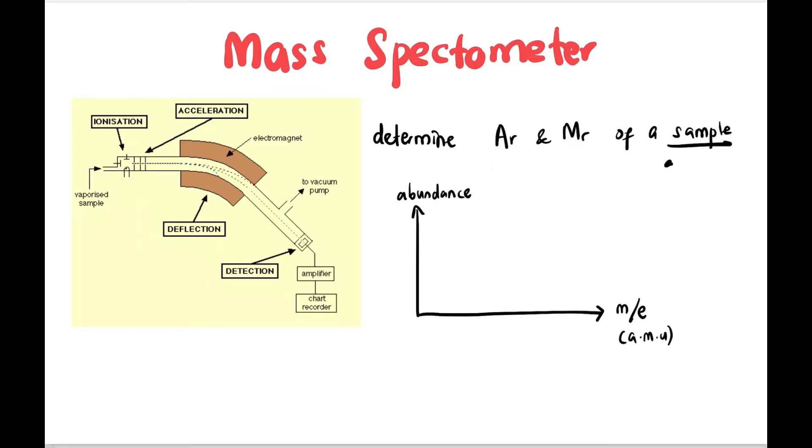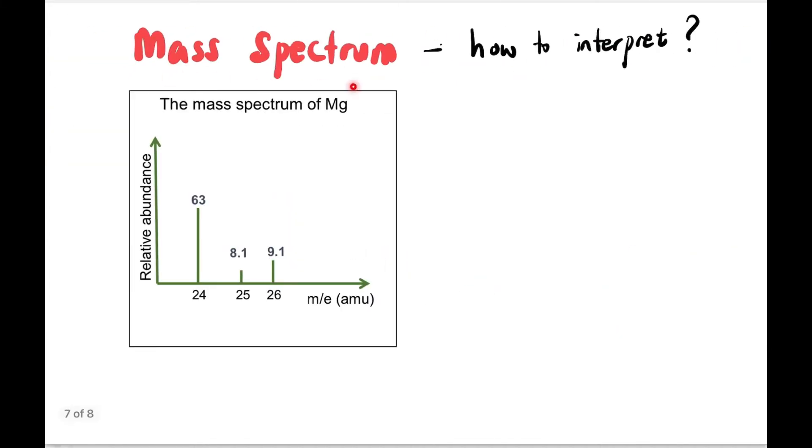Usually the sample that is bombarded is either atom or compound, and the results are recorded in graph form. The graph shows abundance and mass per charge ratio m/e. For example, this is the mass spectrum for magnesium, showing relative abundance and m/e.